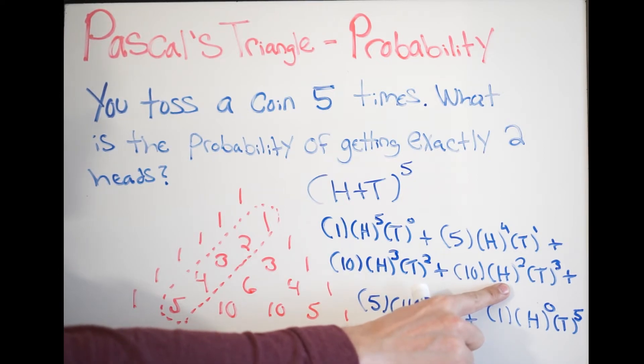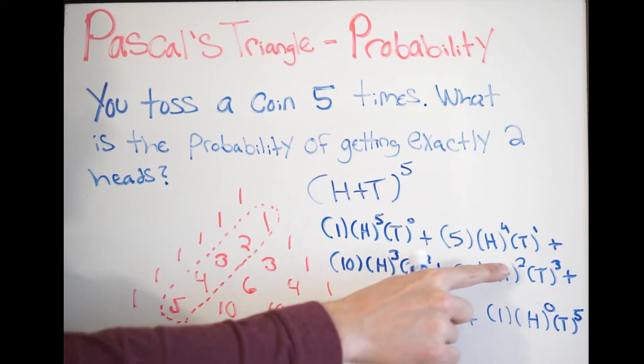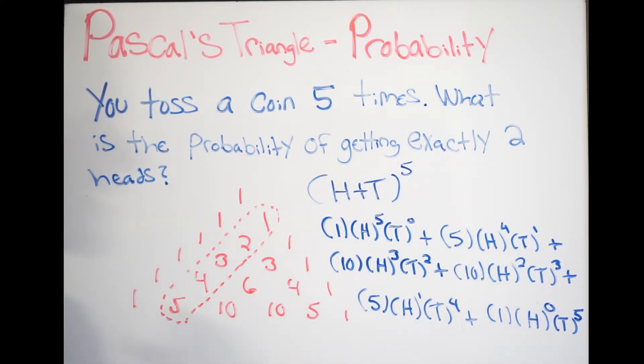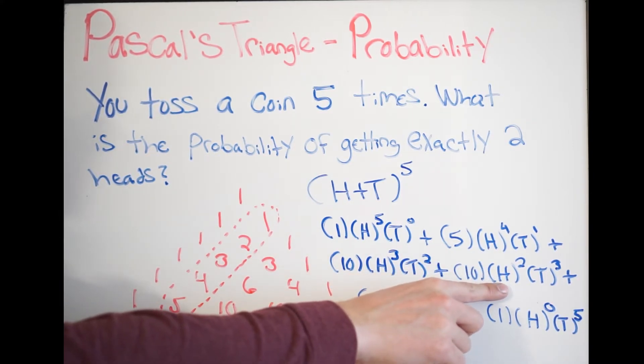What this indicates is the following. There are 10 possible outcomes where I could get exactly two heads. This is the power of Pascal's triangle. That's what that 10 is telling us. So, there's 10 possible outcomes where I could get exactly two heads.